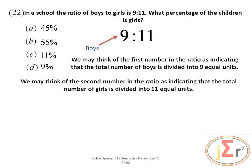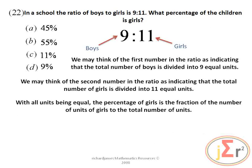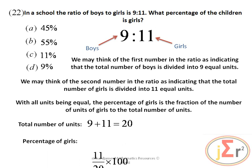We think that the second number in the ratio indicates that the total number of girls is divided into 11 equal parts. So we have 9 equal parts on one side and 11 equal parts on the other. With all units being equal, the percentage of girls is a fraction of the number of units of girls to the total number of units. The total number of units is 9 plus 11, which equals 20.